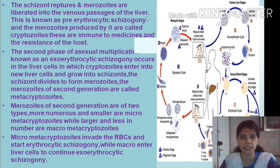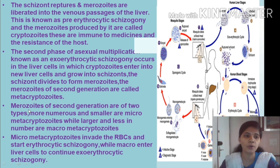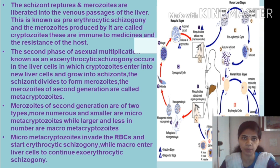When the schizont ruptures, merozoites are liberated into the venous passages of the liver — this is known as pre-erythrocytic schizogony. These merozoites, called cryptozoites, are minute and resistant to medicines and host immunity. The second phase of asexual multiplication — exo-erythrocytic schizogony — occurs in liver cells, where cryptozoites enter new liver cells, grow into schizonts, and divide to form merozoites. Merozoites of this second generation are called metacryptozoites: the more numerous type are macro-metacryptozoites, and the smaller type are micro-metacryptozoites.